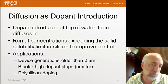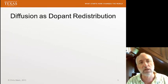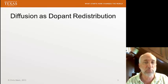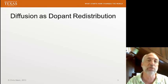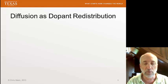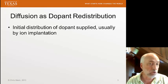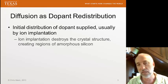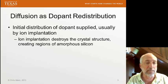Ion implantation is just a little more expensive. But the main reason we're going to focus on diffusion as an important process step is because of the dopant redistribution aspect of it. Whether we introduce the dopant through the diffusion step or with ion implantation, what we want to know is how it diffuses in this high-temperature step. So we have some initial distribution of dopant, usually supplied by ion implantation.